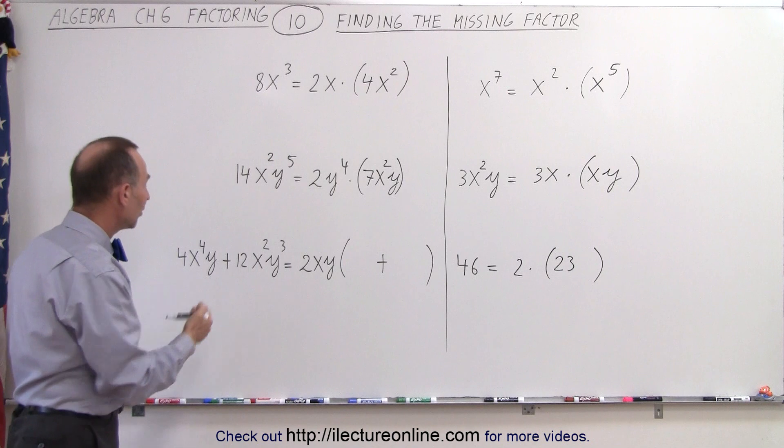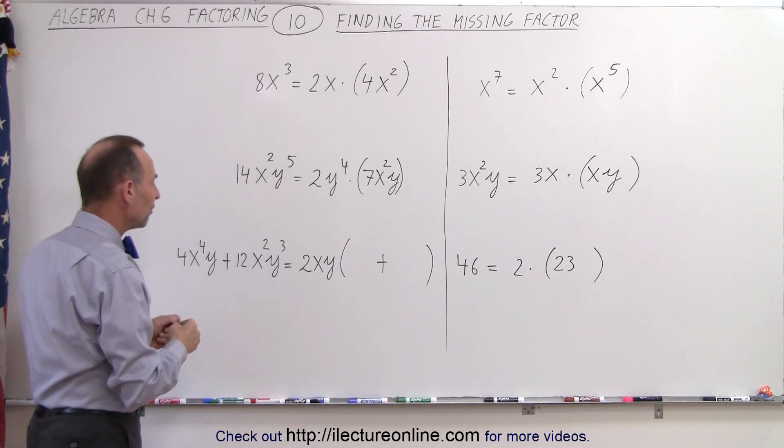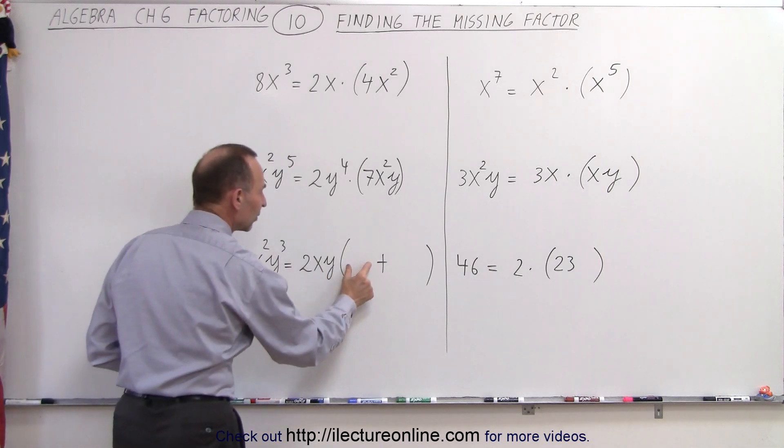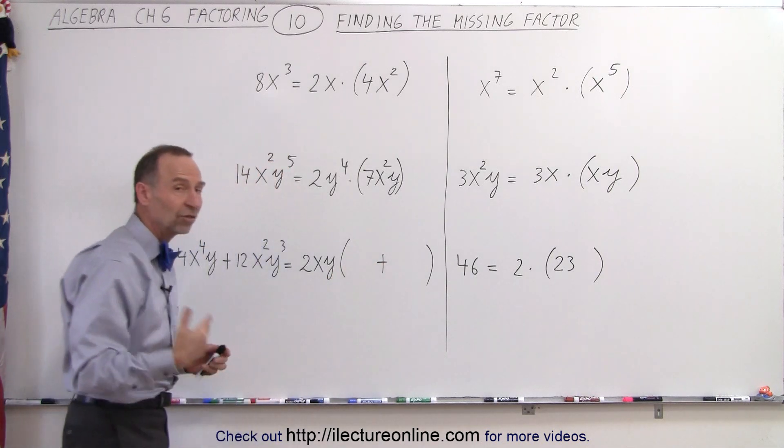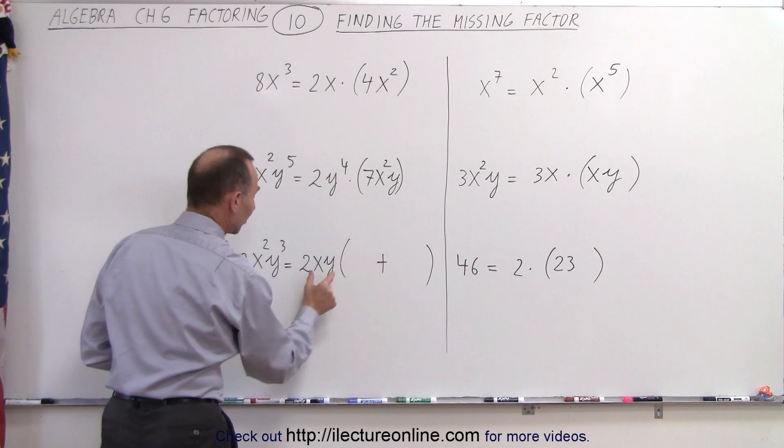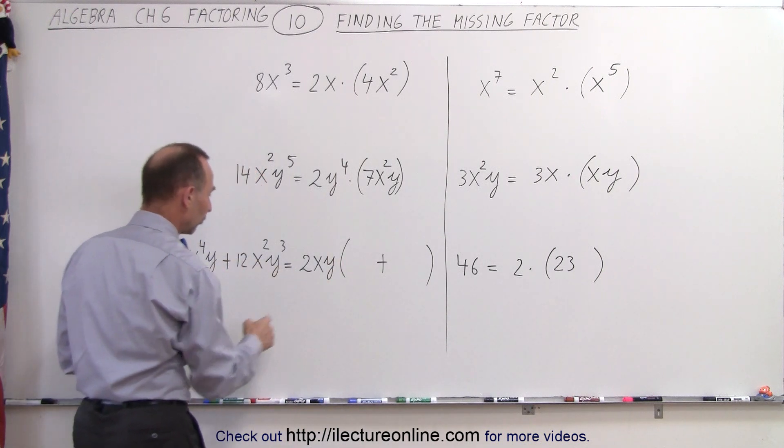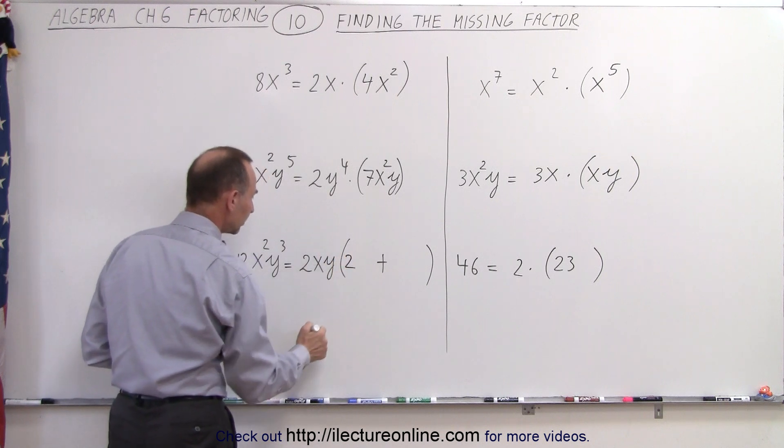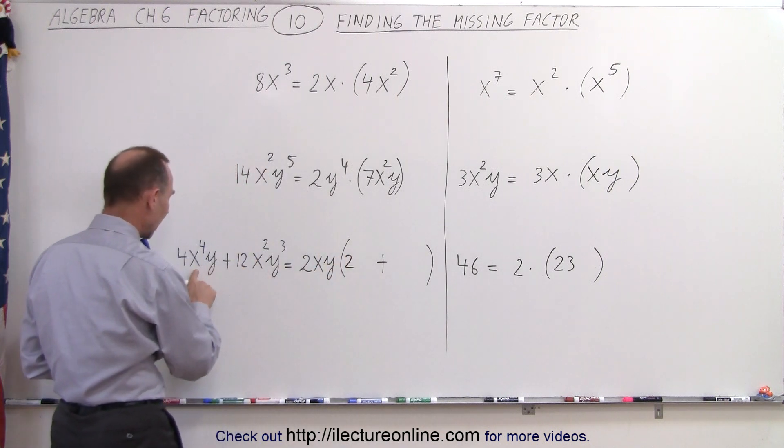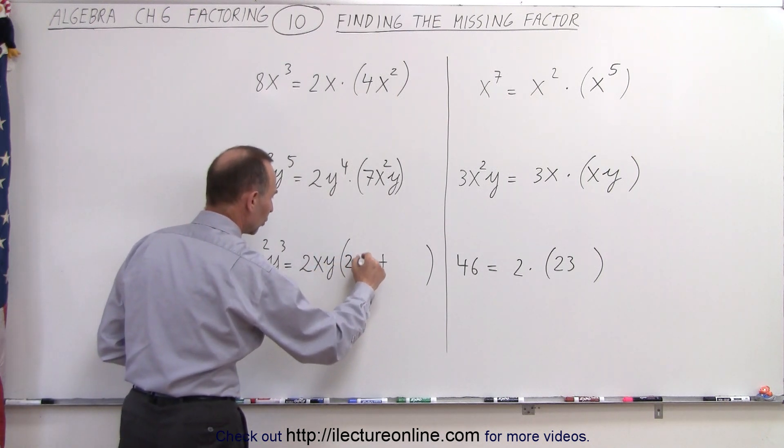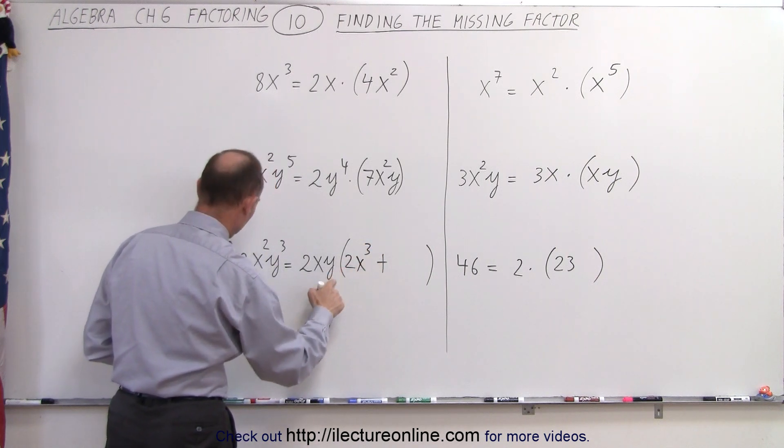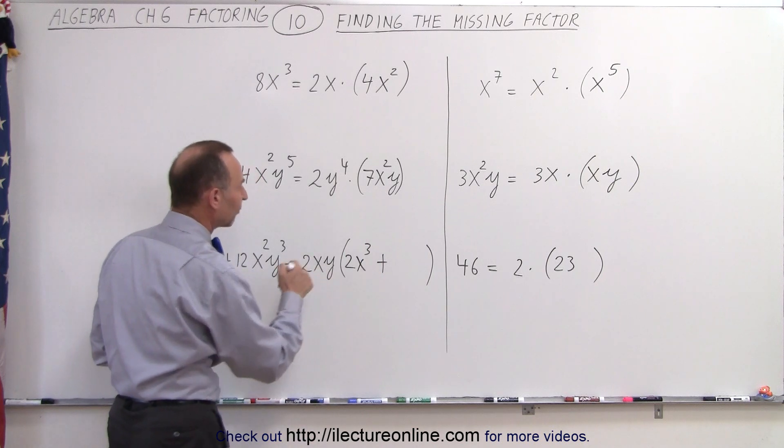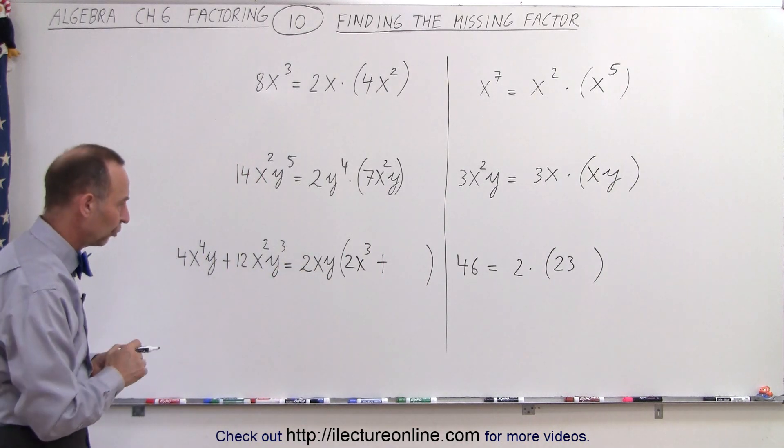And finally, what if we have a binomial and we factor out a common factor of 2xy? What will I have here, and what will I have here? Again, we use the same technique. What times this will give us the first term? First of all, what times 2 gives me 4? Well, that would be 2. What times x gives me x^4? Well, that would be x³. And what times y gives me y? Well, just 1, so I don't need a y there. I already have the y over here. So that's the first term.